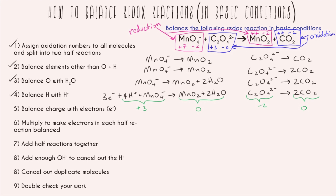For the carbon-containing half reaction, the left-hand side has a charge of negative two and the right-hand side has a charge of zero. We add electrons to the more positive side — adding two electrons to the right-hand side brings it to negative two. Now step six: multiply to balance electrons. We have three electrons in one half reaction and two in the other, so we multiply the manganese reaction by two and the carbon reaction by three, giving us six electrons on both sides.